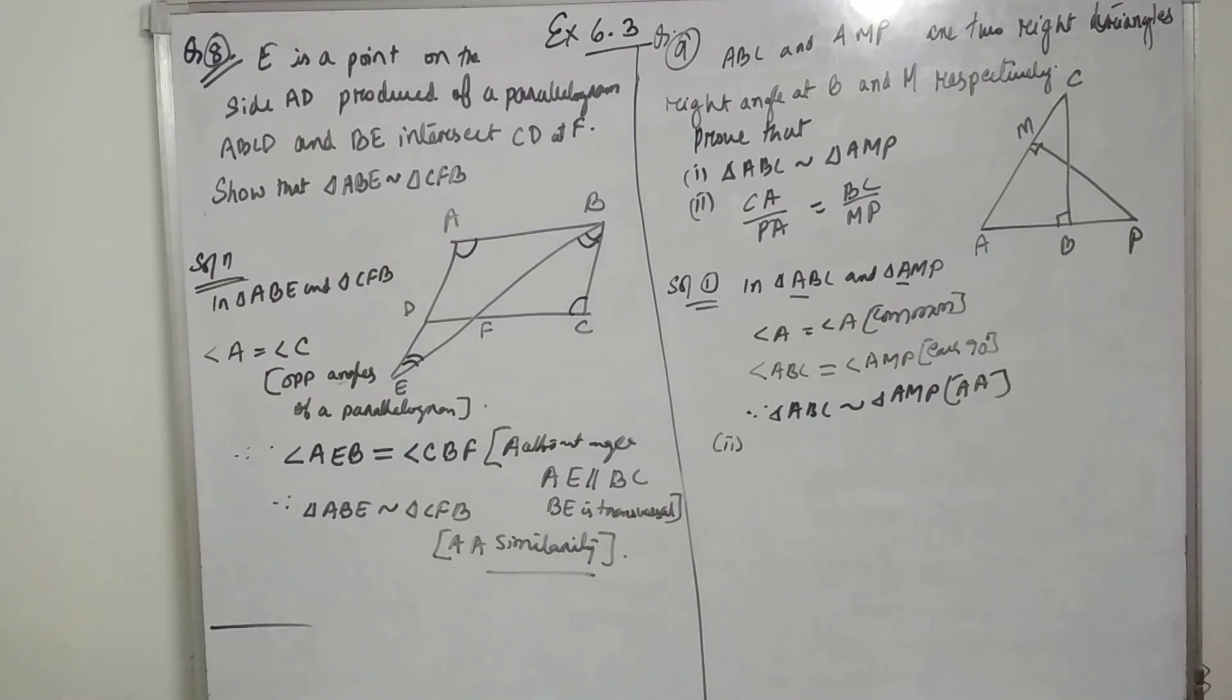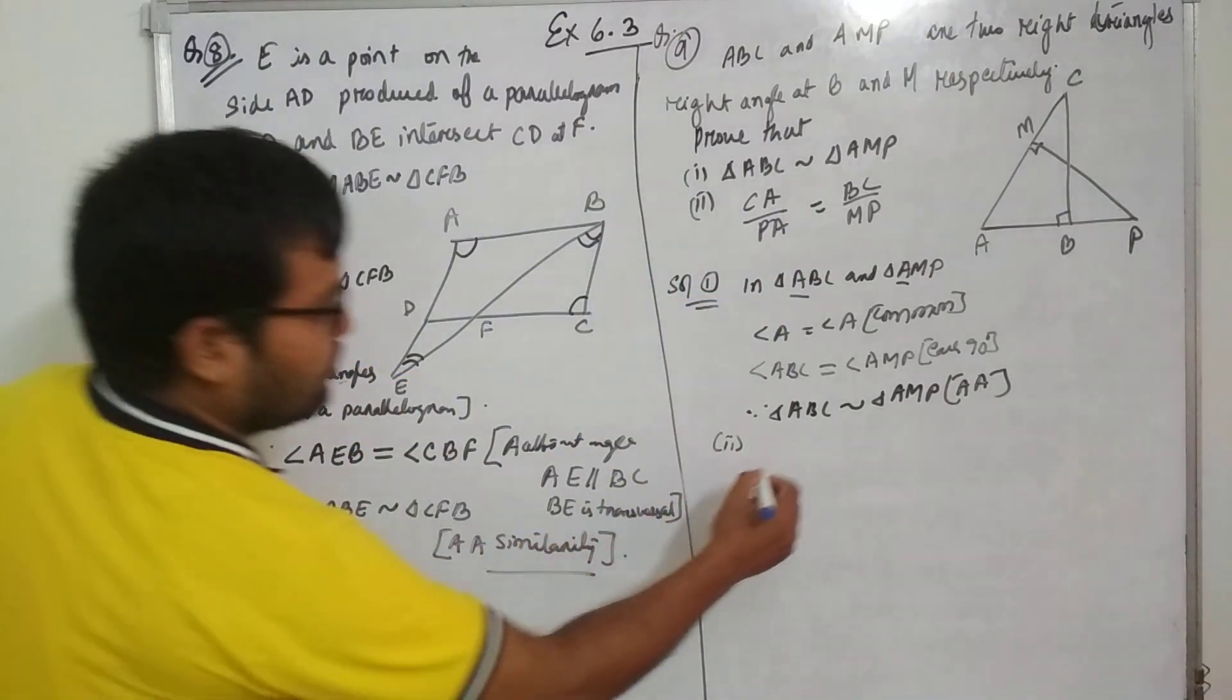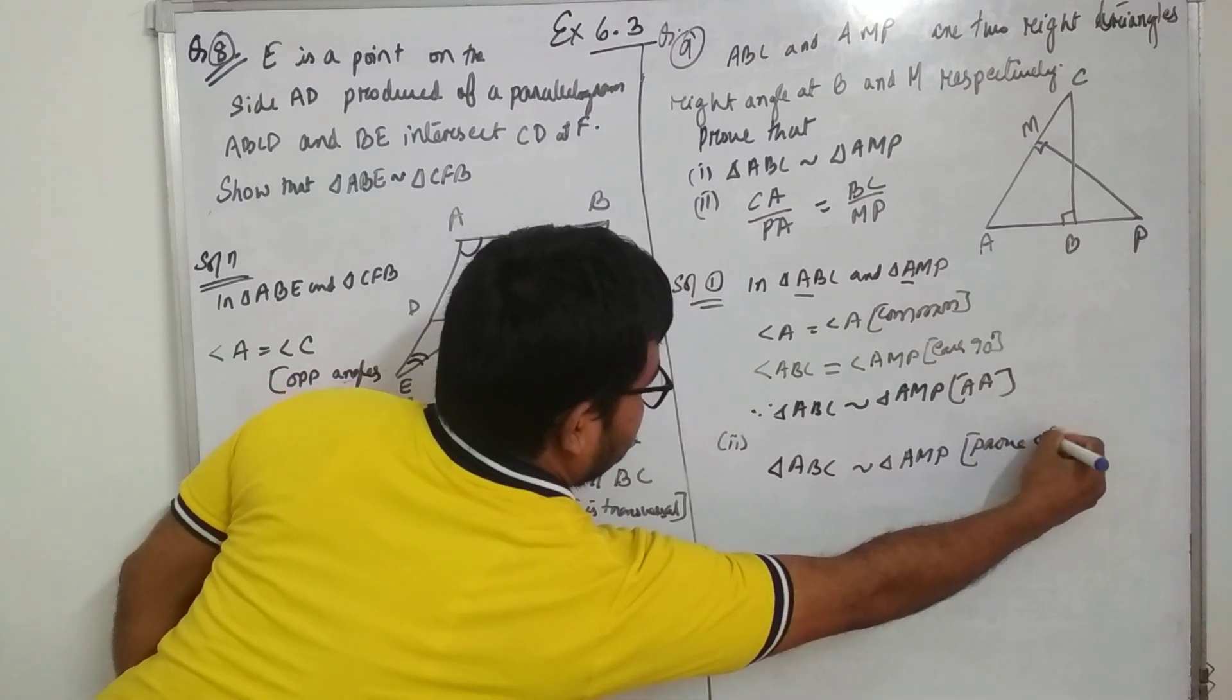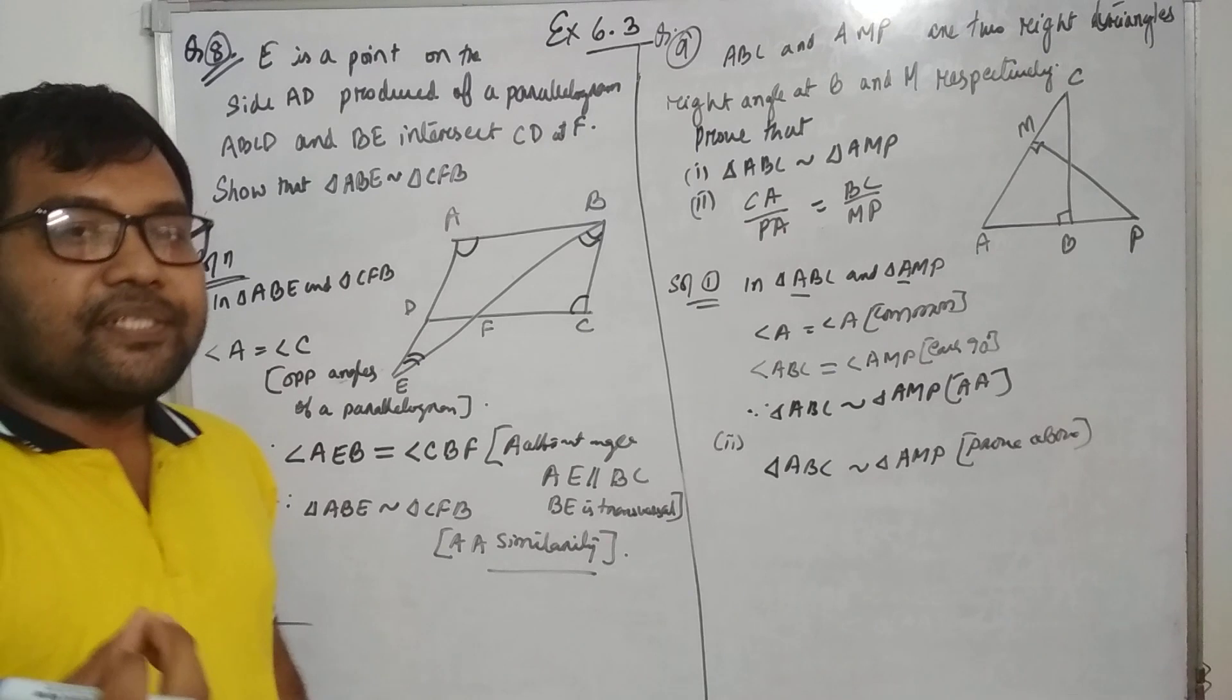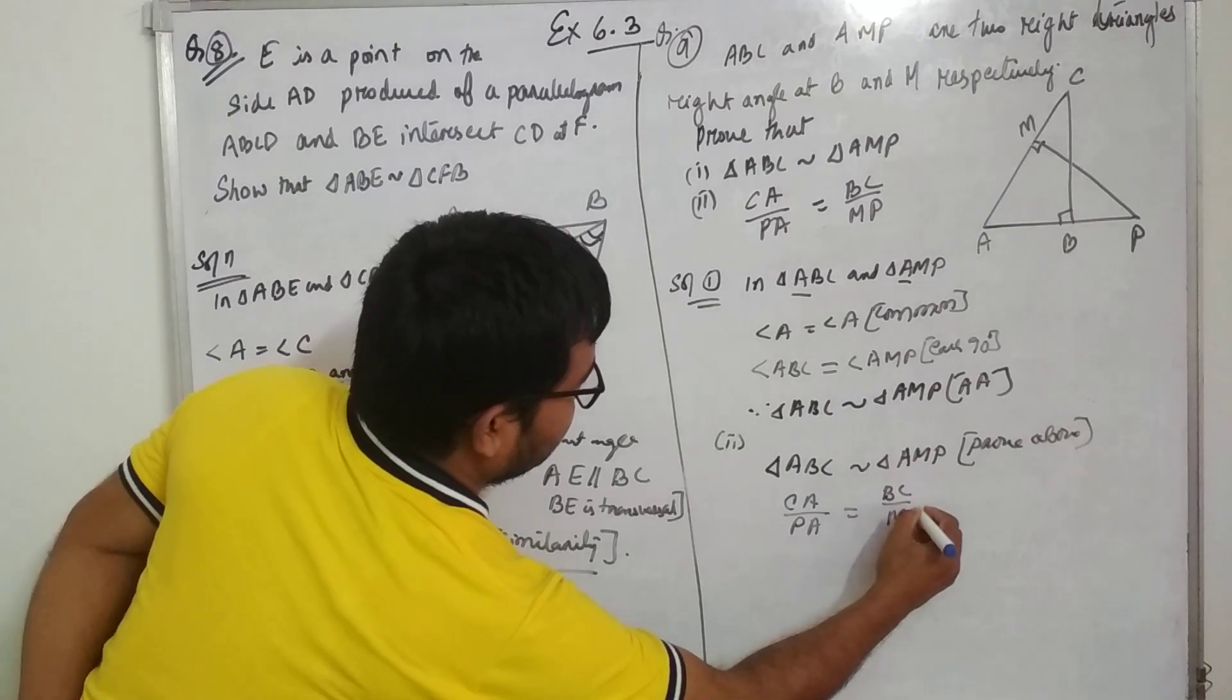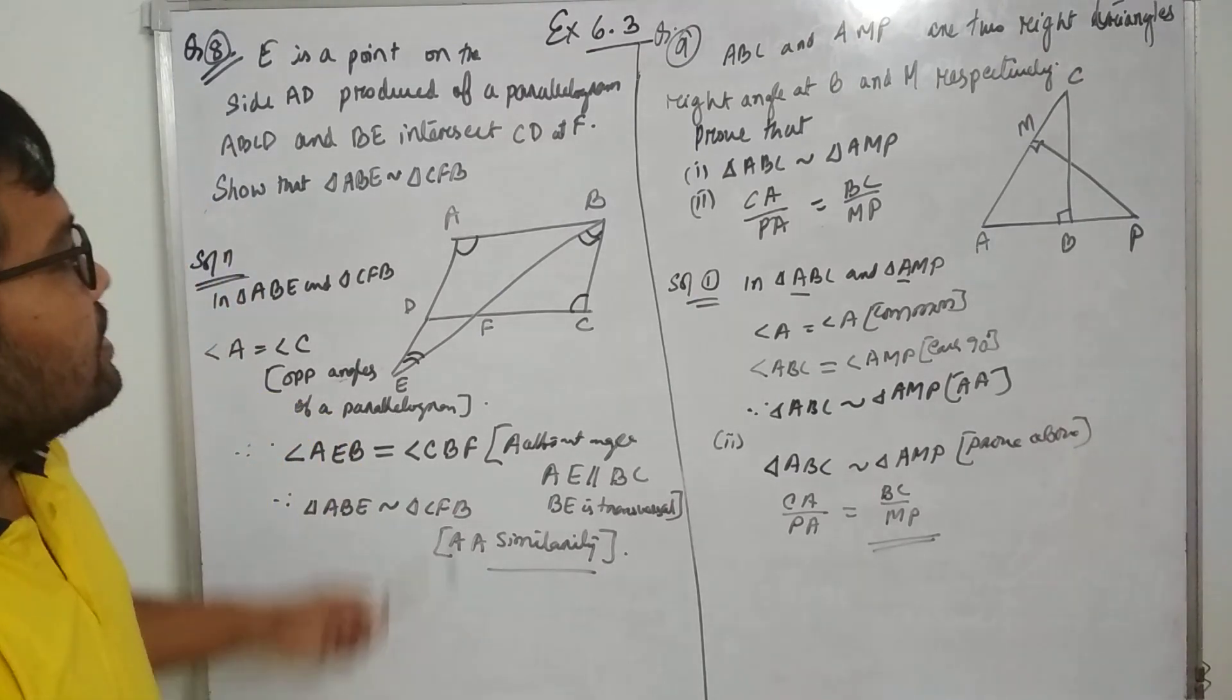There was a slight change in the question. Now you will see CA by PA equal to BC by MP. We have triangle ABC similar to triangle AMP, proof above. Therefore in a similar triangle the sides are in proportion. Therefore CA by PA equal to BC by MP.